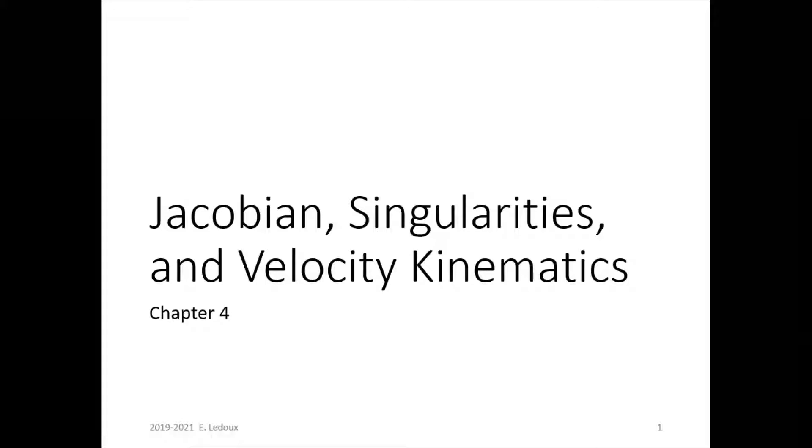Chapter 4 covers the Jacobian, singularities, and velocity kinematics. The Jacobian is a partial derivative matrix of end effector position with respect to joint position, and it is used to find singularities and velocities. We'll start with talking about the Jacobian, and then later videos will cover singularities and velocity kinematics.